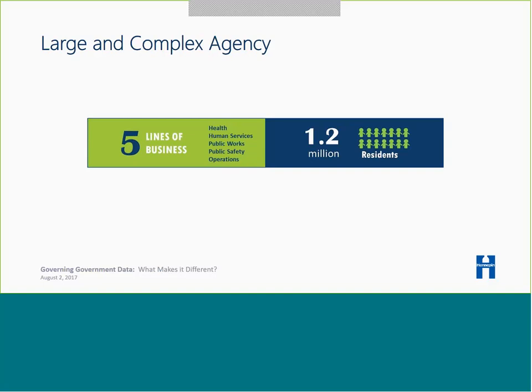Hennepin County is a large and complex agency with 30 departments and over 8,000 staff. It serves 1.2 million residents, as well as others who commute to work in one of our 45 cities. Services are multifaceted, ranging across five lines of business: health, human services, public works, public safety, and operations. This means data is collected on roads and bridges, law enforcement, corrections, energy and environment, licensing, properties, social services, protective services, and libraries, just to name a few. These factors create distinct challenges to implementing a data governance program.